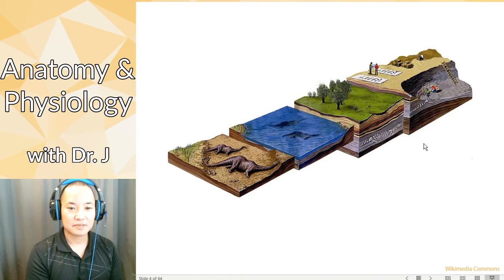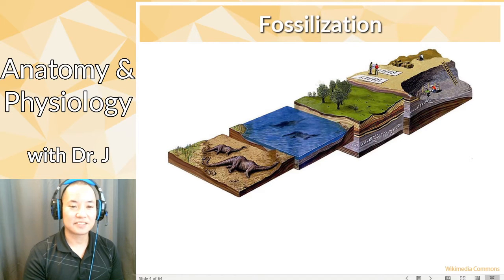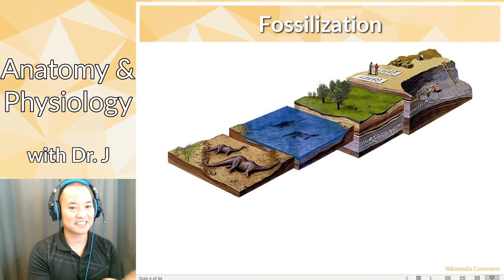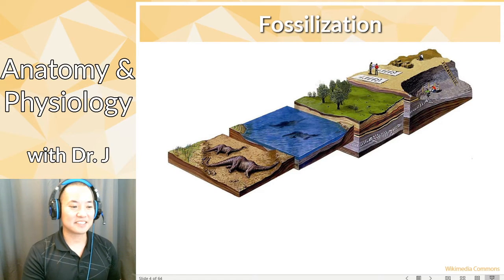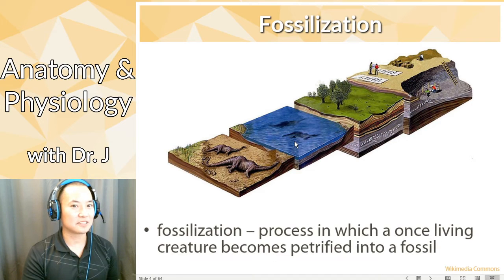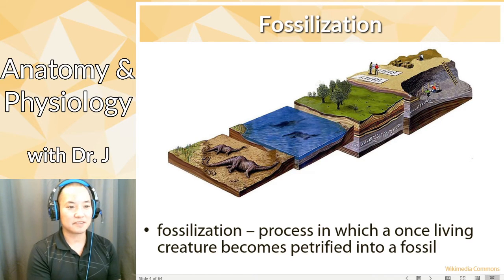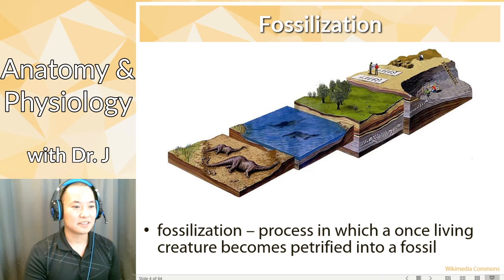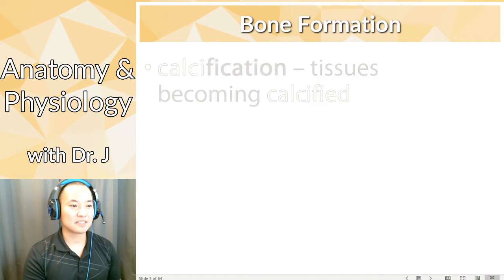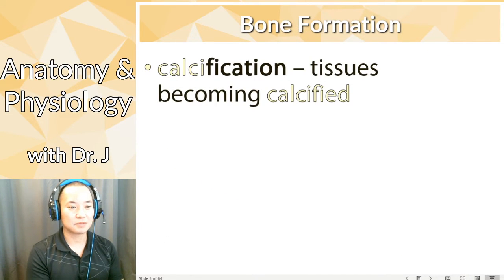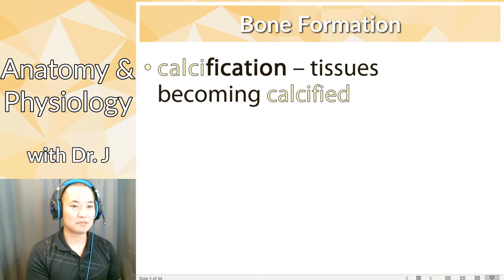Now, just like fossilization — where a once-living organism eventually becomes petrified, mineralized, and becomes a fossil — with bone formation you have calcification. This is when a tissue becomes calcified, and bone is the classic example, but other tissues can be calcified as well.